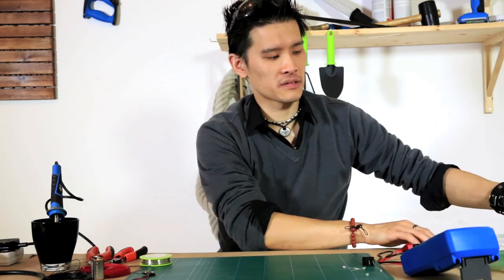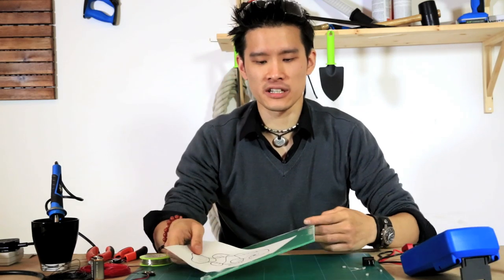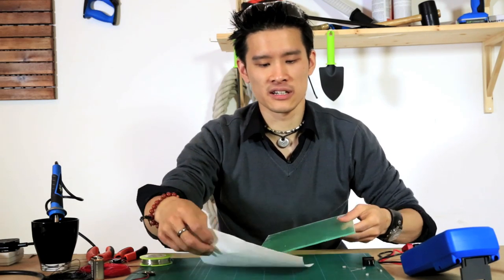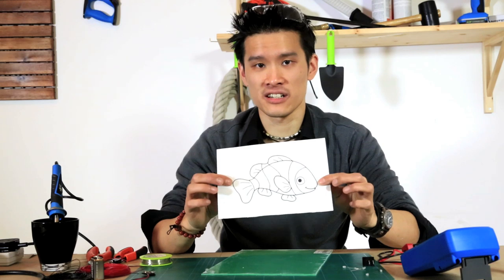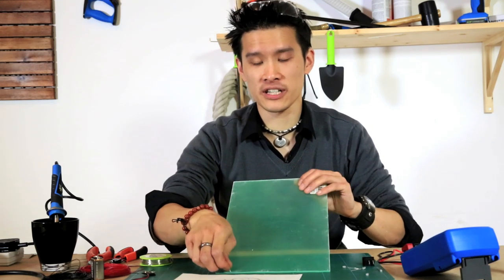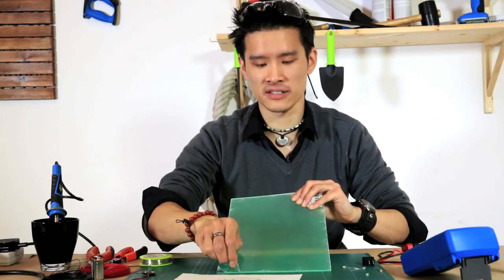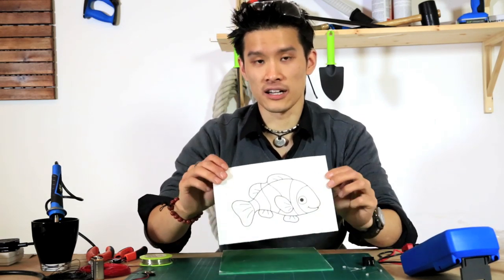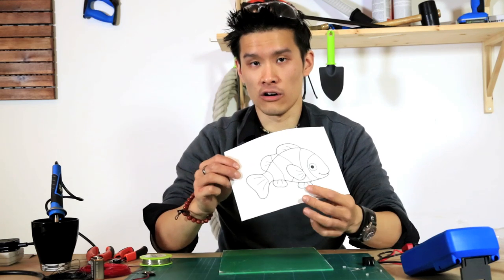So first things first, we need to take a piece of plexiglass that we will etch the design onto. We've chosen this cartoon fish. You need to remove the protective coating from one side of the plastic and stick the picture in reverse onto the plastic.